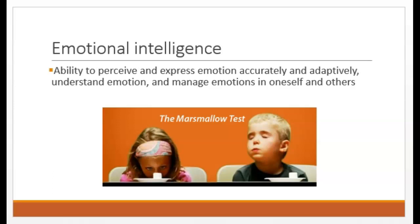They do all sorts of things to manage themselves and their temptation — they close their eyes, look out the window, pretend it's a fake plastic marshmallow, and so on. Eventually their patience pays off and they get two marshmallows. Researchers discovered that when those children who waited were grown up, they were noticeably more successful than those who were unable to delay gratification. They were the people who saved their money instead of spending it, who studied instead of procrastinating, who were patient and thorough instead of trying to cut corners. The ability to manage yourself is a hugely adaptive skill.